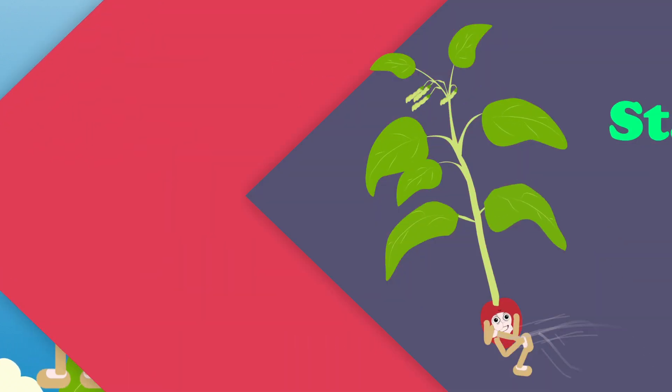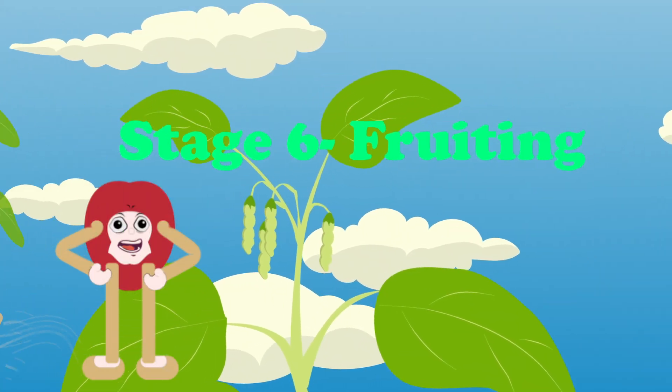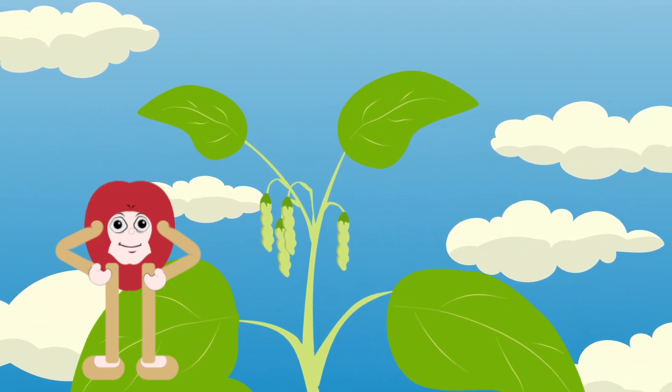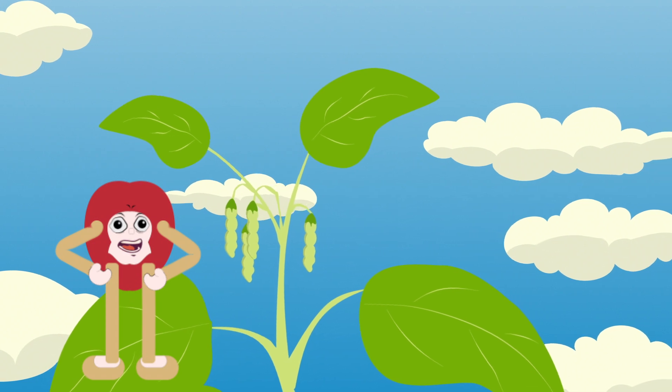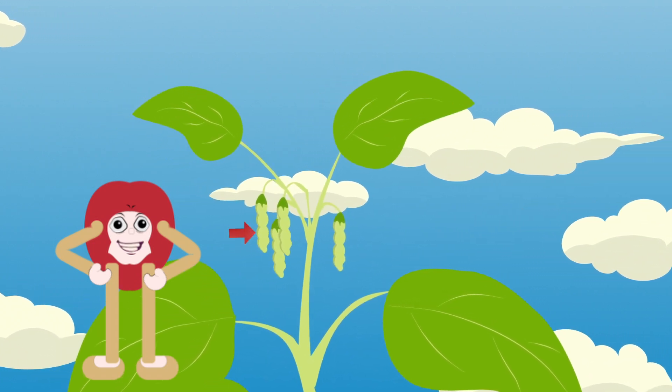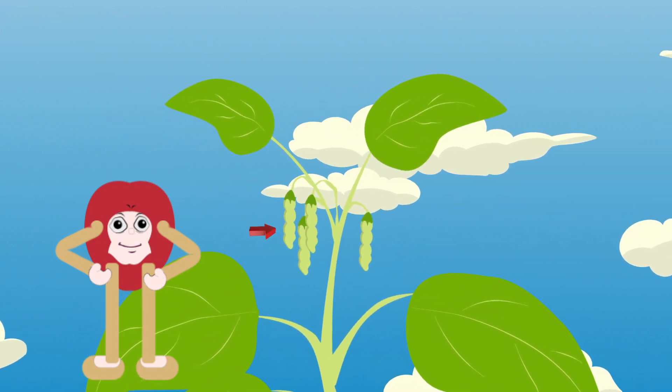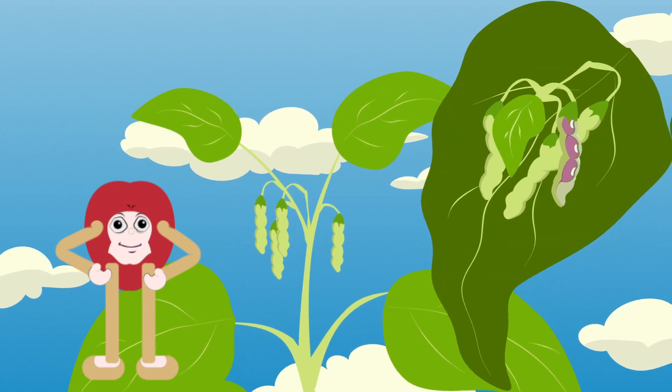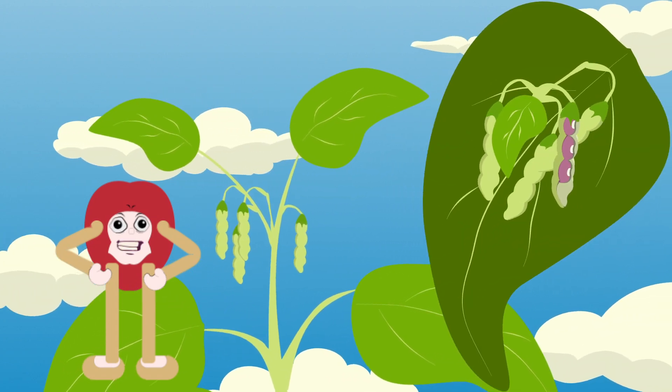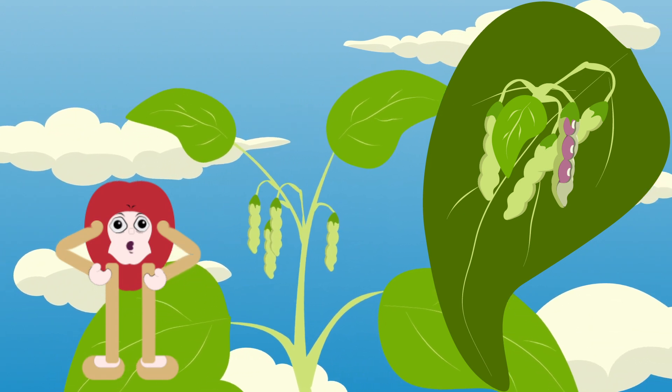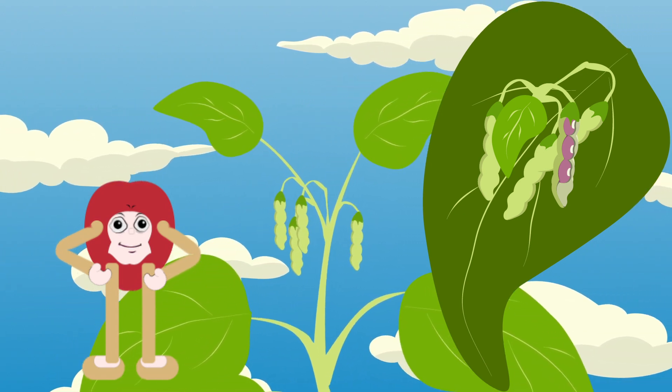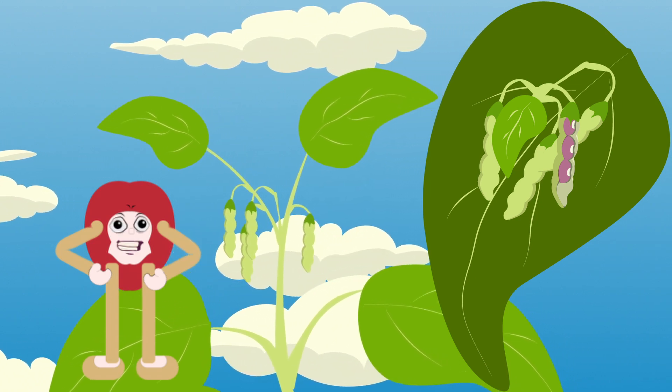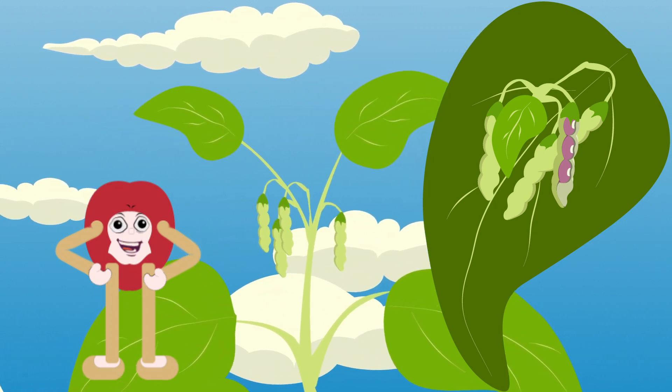Stage 6: The Fruiting Stage. After successful pollination, the flowers start to fade away and the little pods start to form. Inside these pods are the baby beans. As the pods grow bigger, the beans inside grow too. When the pods are ready, they'll turn brown and that's when we know it's time to harvest the beans.